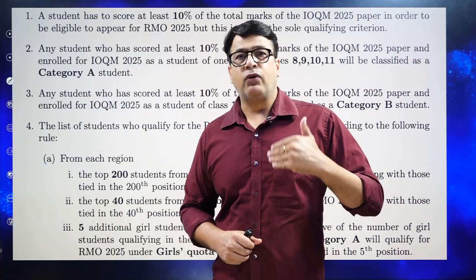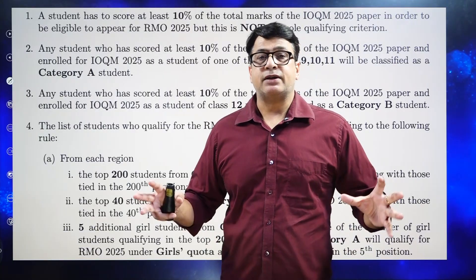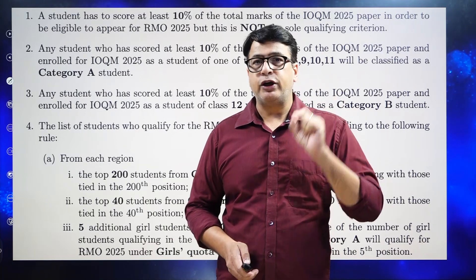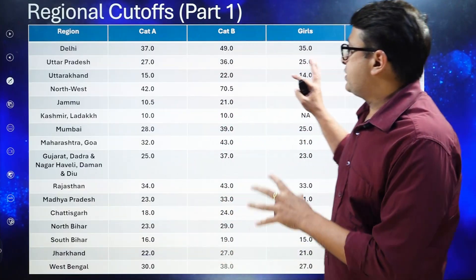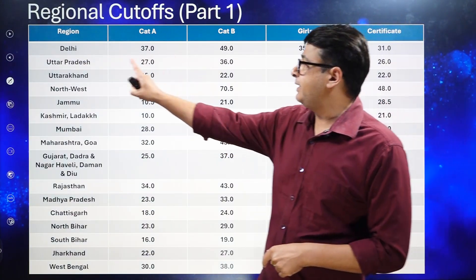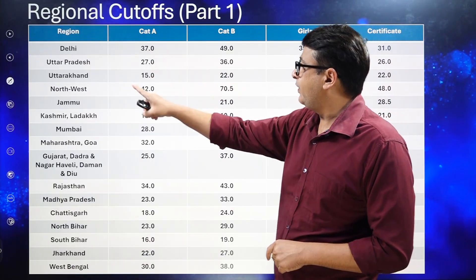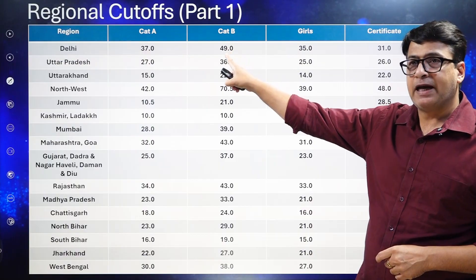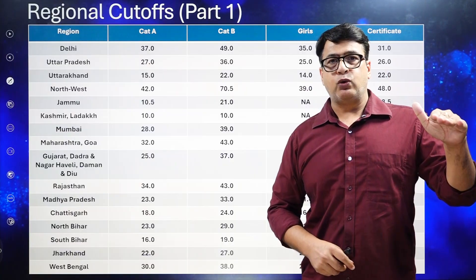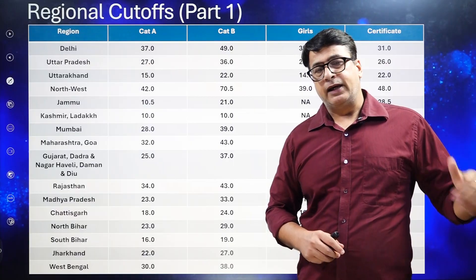Overall, 8,000+ students are selected across the country from different regions for RMO 2025. For the 2025 cutoffs: in Delhi, Category A (classes 8–11) the cutoff is 37, and Category B is 49. We will also see how cutoffs in some states increased, remained the same, or decreased compared to 2024.